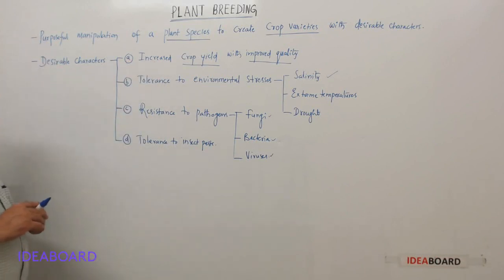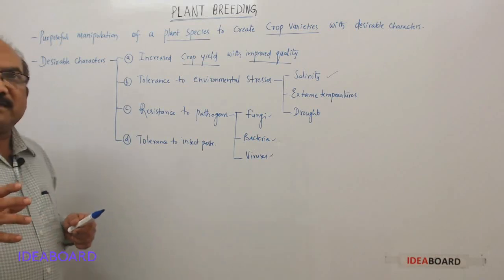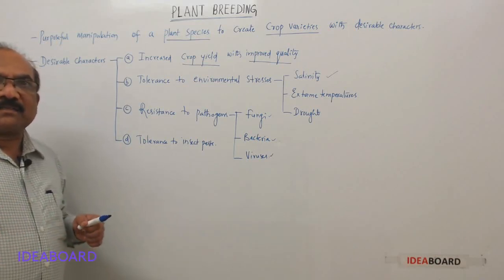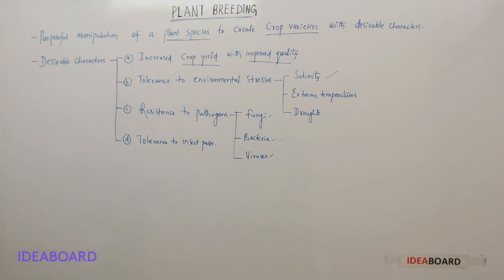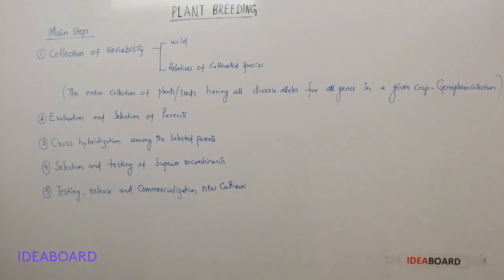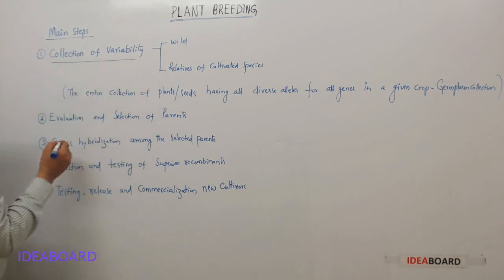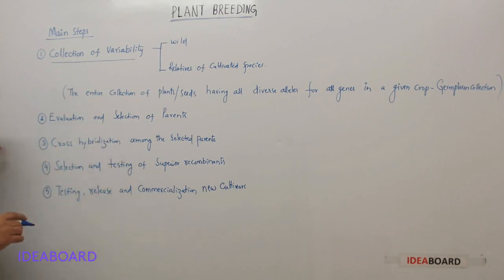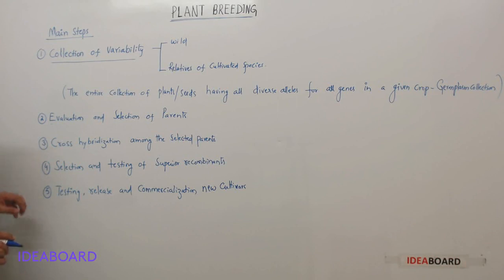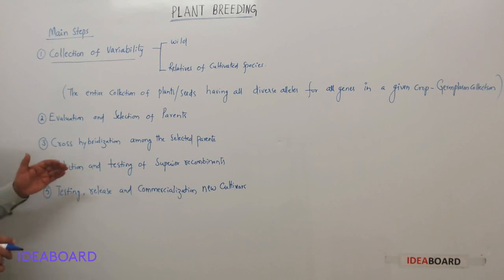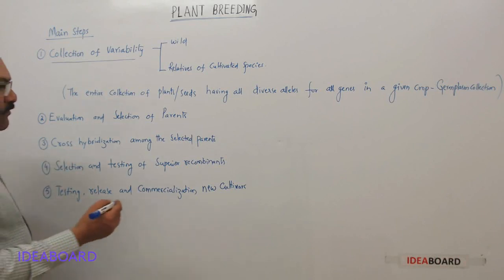Now let us see the main steps in plant breeding. Step one is collection of variability. Step two is evaluation and selection of parents. Step three is cross-hybridization among the selected parents. Step four is selection and testing of superior recombinants. Step five is testing, release, and commercialization of new cultivars.